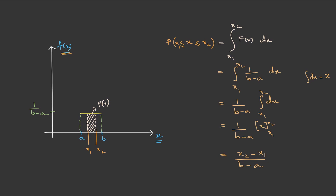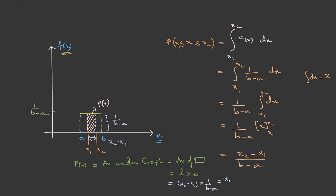We can also solve this another way, because the graph is a regular figure — it is basically a rectangle. The probability is the area under the graph, which is the area of a rectangle, that is length times breadth. Here, the length is (x2 minus x1) and the breadth is 1/(b minus a). Therefore, the probability is (x2 minus x1) times 1/(b minus a), which equals (x2 minus x1)/(b minus a). So either by integration or by the rectangle area method, you get the same answer.